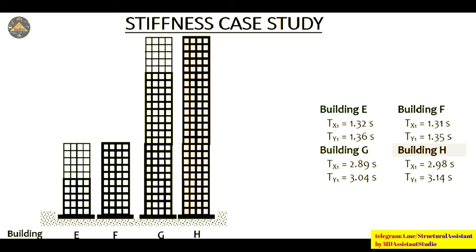Time period is inversely proportional to the stiffness of the building — if stiffness increases, time period decreases. In the case of building F, providing continuous uniform column sizes increases stiffness, so time period decreases. In building E, allowing more translational deflection reduces stiffness, so time period increases. The same relationship holds for the 25-story buildings, though the difference between E and F is only about 0.01 second.